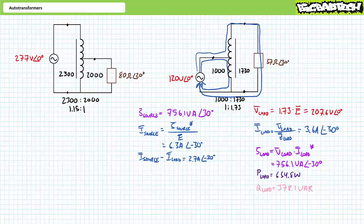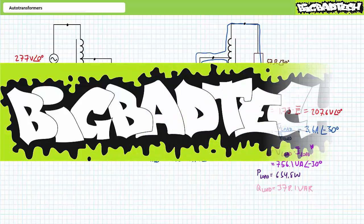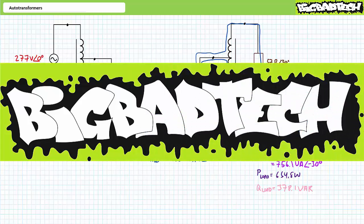In conclusion, this lecture introduced the auto transformer. We compared and contrasted auto transformers with traditional transformers and learned to perform circuit analysis on circuits including auto transformers. Remember to review these concepts as often as you need to really drive it home — imagine how well lab will go if you know what you're doing. Thank you very much for your attention and interest, and we'll see you again during the next lecture of our series. Remember to tell your lab partner about this resource and check out the Big Bad Tech channel for additional resources and updates.